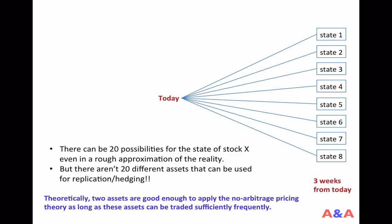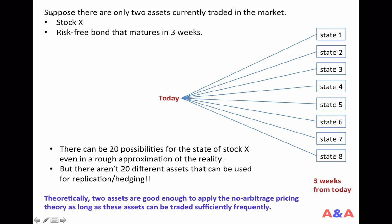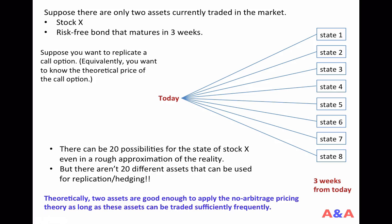How can it be possible? Suppose there are only two assets currently traded in the market: stock X and the risk-free bond that matures in a three-week period. Suppose you want to replicate a call option, or equivalently, you want to know the theoretical price of the call option. It turns out that the theoretical price of a call or put option is equal to the cost to replicate that option with some other assets.